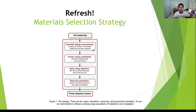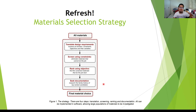This involves expressing the function, constraints, objectives, and free variables from the information given to us — whether from the design or from market study, surveys, and questionnaires. Next, we screen materials based on constraints, eliminating materials that cannot do the job. Then we rank by objectives, finding the materials that can do the job best, and seek documentation on the top candidates.